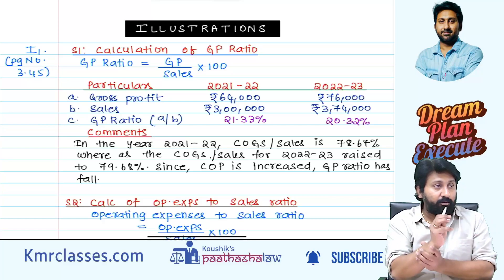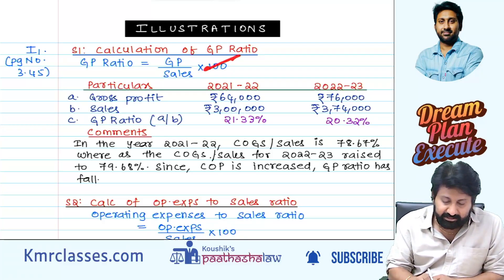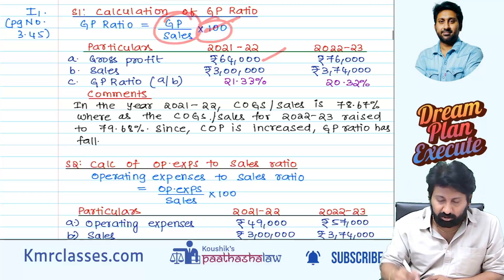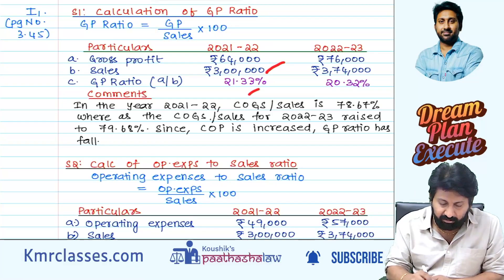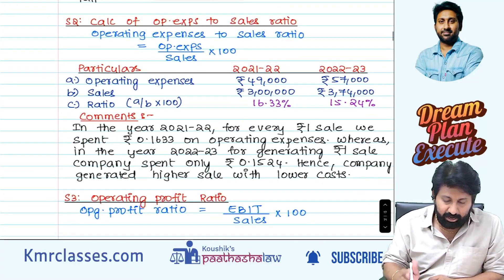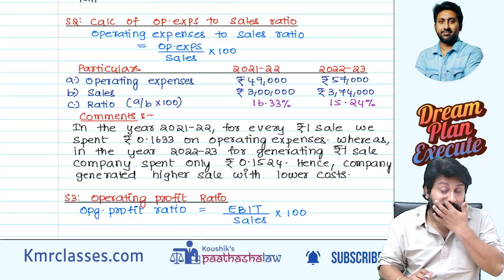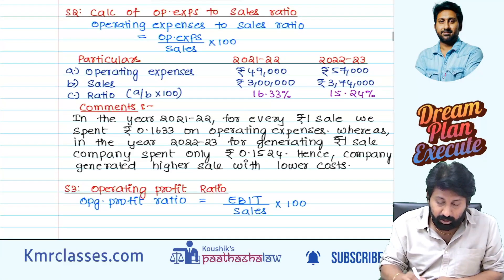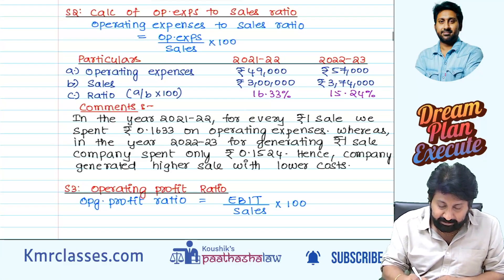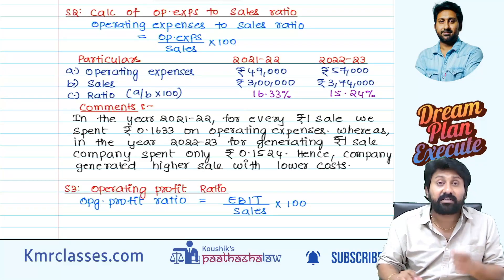Direct problem adjustments — concentrate properly. GP means GP divided by sales. They will give you the gross profit amount with the question; sales they will give. GP divided by sales gives you GP ratio. Next one: operating expenses to sales ratio. If they ask a question like this, operating expenses they will give, sales they will give. Ratio will be operating expenses by sales into 100.